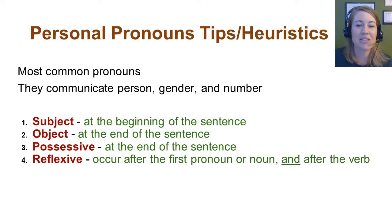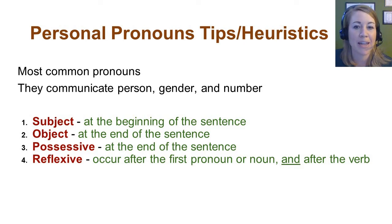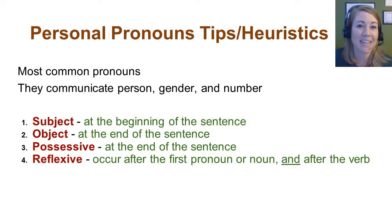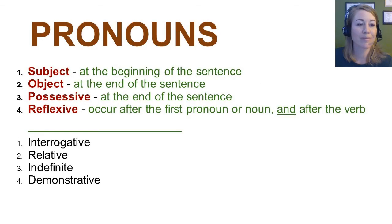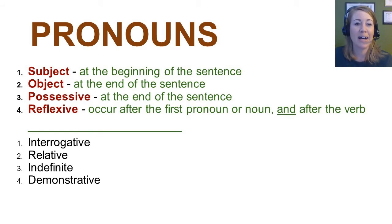So we've looked at personal pronouns — the most common pronouns. They communicate person, gender, and number, meaning how many people: 'I' refers to one person, 'them' refers to multiple people. To summarize: subject pronouns occur at the beginning of the sentence; object pronouns occur at the end; possessive pronouns also occur at the end; and reflexive pronouns occur after the first pronoun or noun and after the verb. We still have four more categories of pronouns to look at, and you're not going to have all of these memorized — you have this PowerPoint to come back to.